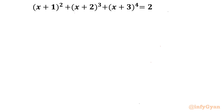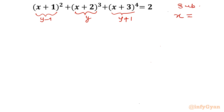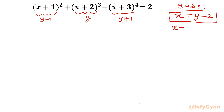I am going to use the substitution x+2 = y. If it is y, then x+1 would be y−1, and x+3 would be y+1. So our substitution is x+2 = y, or equivalently x = y−2. Both are the same thing. Let's talk about the equation now.